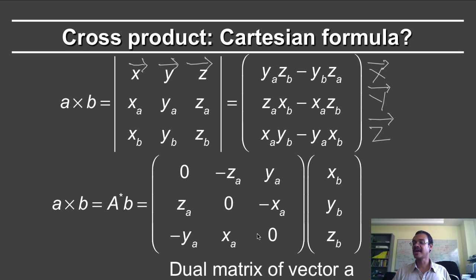This matrix, which has this interesting form of zeros along the diagonals, and anti-symmetries, so zA, zA, but change in signs, is what is known as the dual matrix of the vector A. So given a vector A, we can convert it into this dual matrix A star, which can be used then to compute the cross product with the vector B.